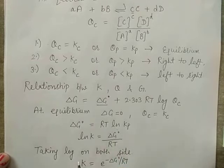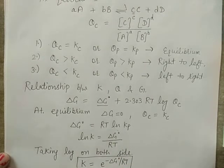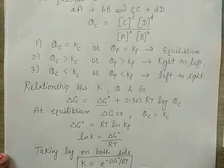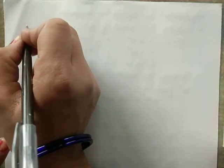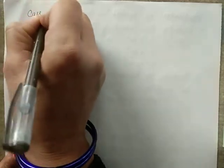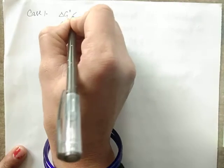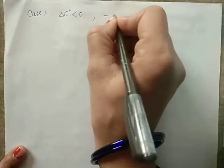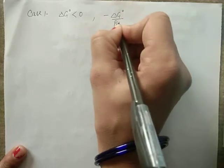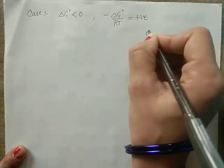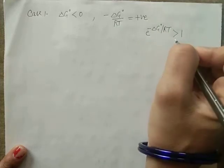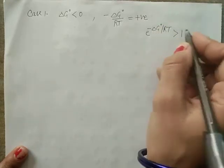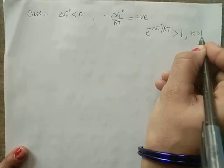Case 1: If ΔG° is less than 0, then −ΔG°/RT will be positive, meaning e^(−ΔG°/RT) is greater than 1. It means K value is also greater than 1.